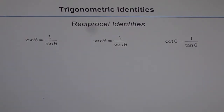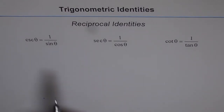Trigonometric identities — reciprocal identities. This is the very first set of identities you need to know to prove trigonometric identities. It relates your primary trigonometric ratios with the other three, which are reciprocal ratios.